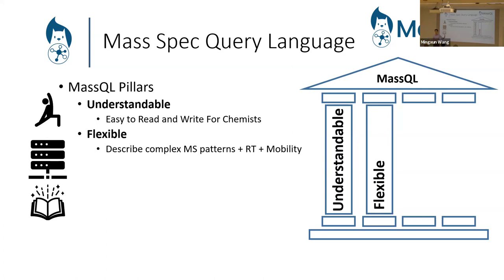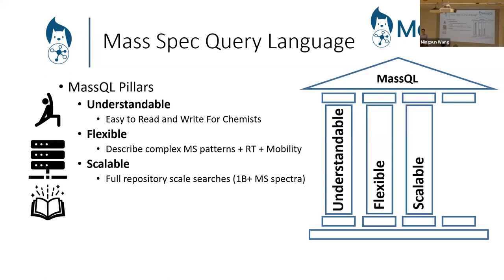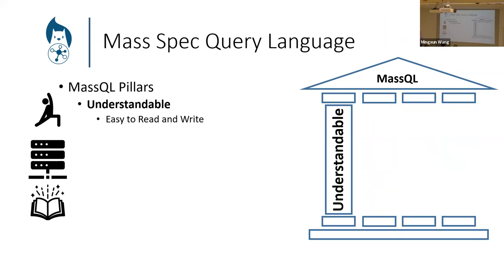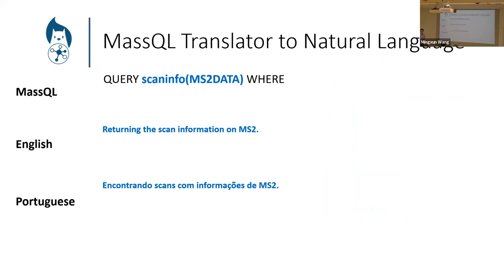MassQL needs to be a language that allows chemists to read and write it very naturally in the way they're already thinking. It needs to be flexible enough to describe all the complexity of patterns people are looking for today, based on mass spec and mass-spec adjacent properties: retention time, ion mobility. It also needs to be scalable — that's the main selling point when we write the paper, though it's still useful even for a single file. It also needs to be reusable: if people describe what they're looking for, you can give them a codified pattern that's easily reproducible and a distillation of chemistry knowledge.